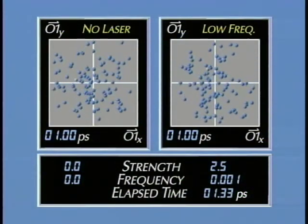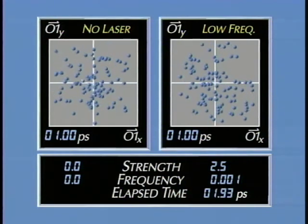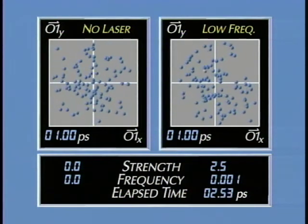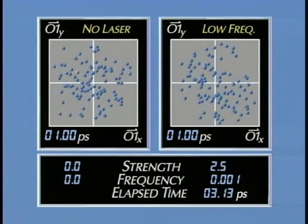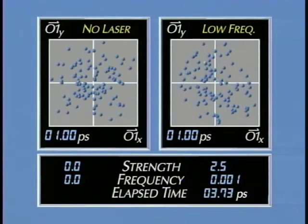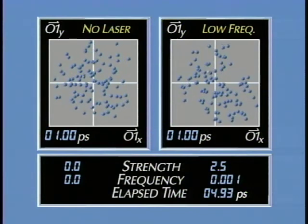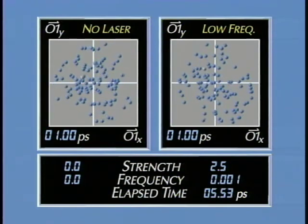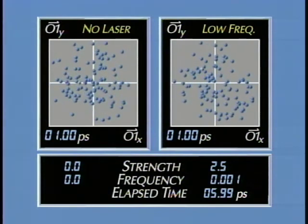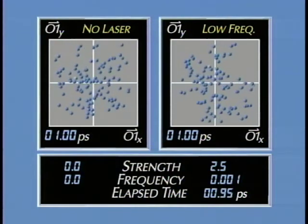For each molecule, the x component of the molecule's orientation vector 1 is plotted on the horizontal axis at time t, the current elapsed time shown on the clock. On the vertical axis is plotted the value of the y component of the same orientation vector, which is measured at time t plus lag. The lag time is shown in the lower left of each scatter plot.